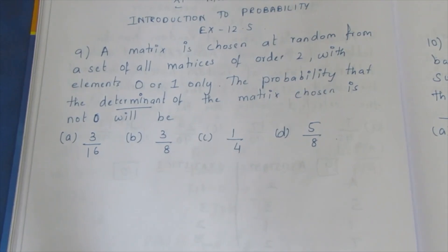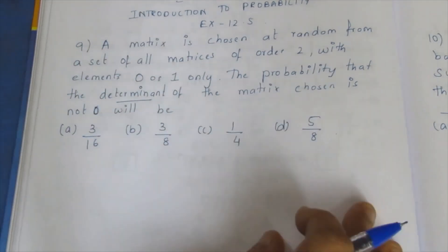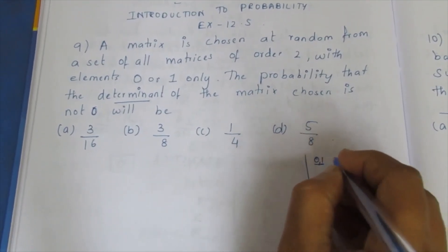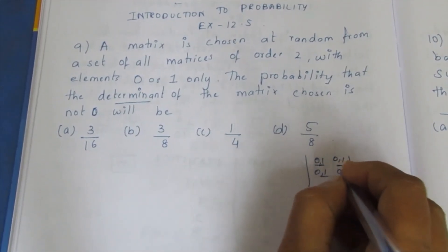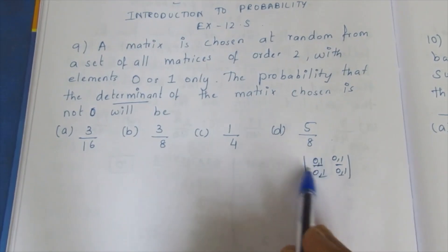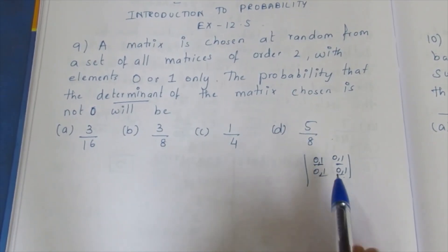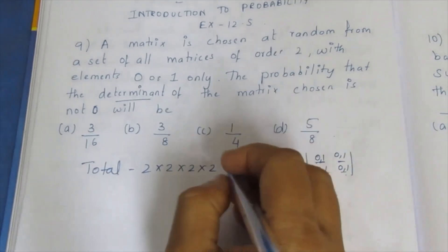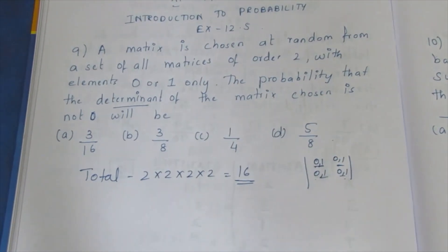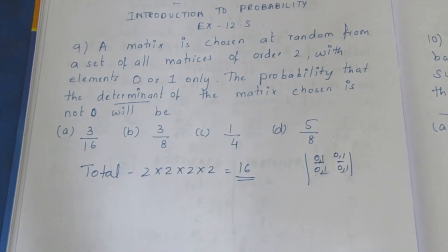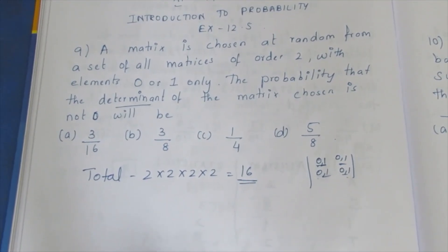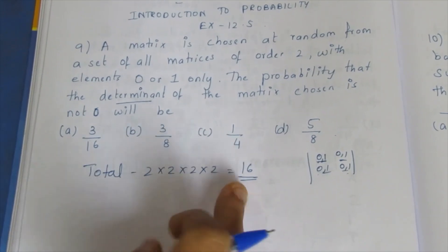The determinant value can be 0, or a negative or positive number. Now, for a 2×2 matrix, each element can be either 0 or 1 — that gives 2 ways per element. Total number of matrices is 2 × 2 × 2 × 2 = 16.